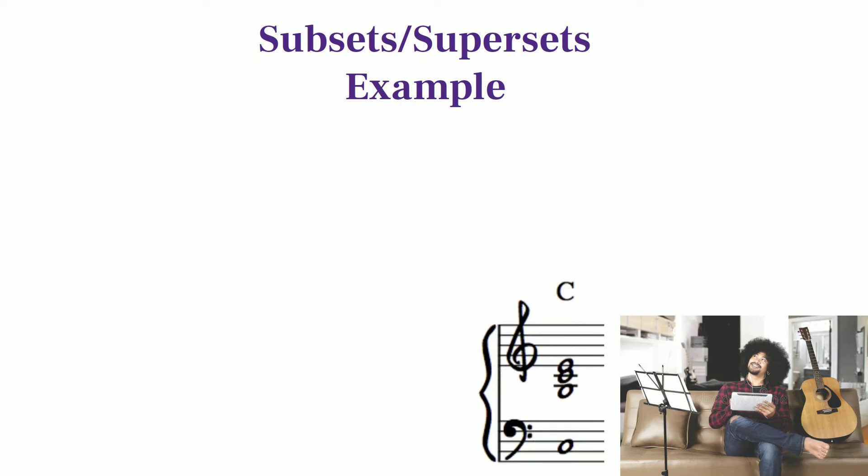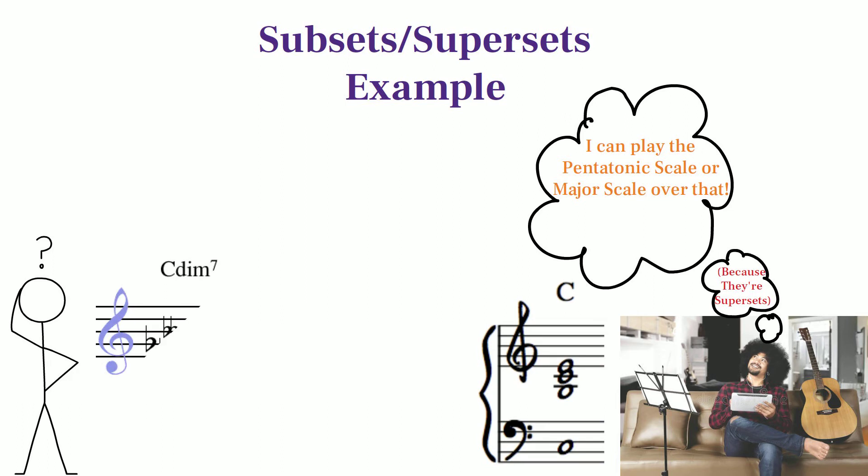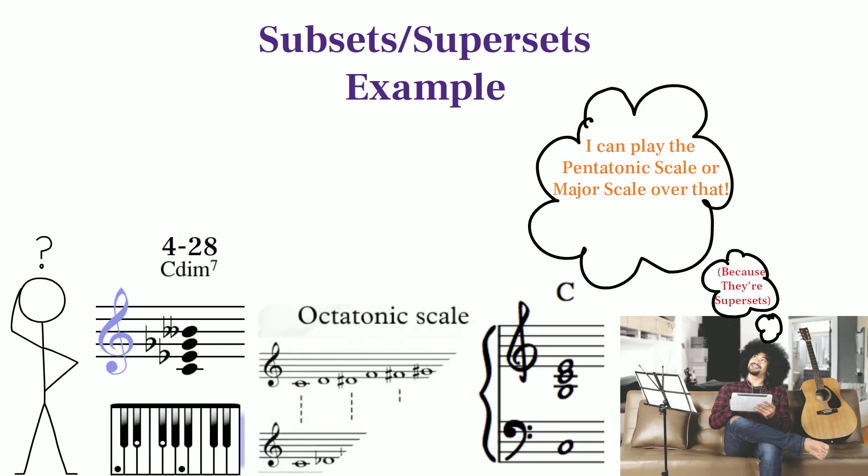When a jazz soloist is looking for a scale to play over a chord, they are essentially looking for a superset that includes the chord being played, along with extra pitches to use for soloing. For example, a friend recently asked me what scale he could use melodically to play over a fully diminished chord. I told him the biggest scale or superset he could practically use is the octatonic scale.